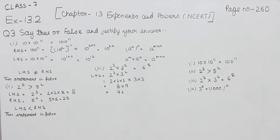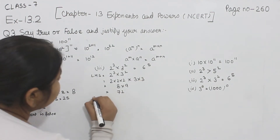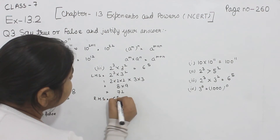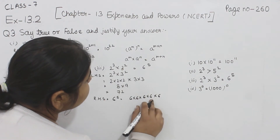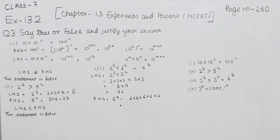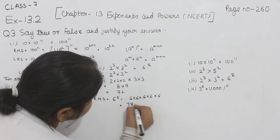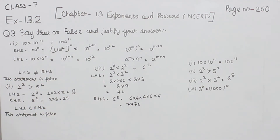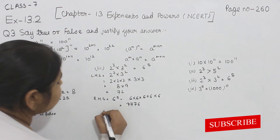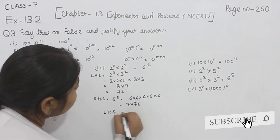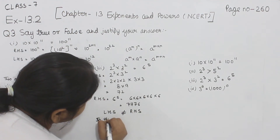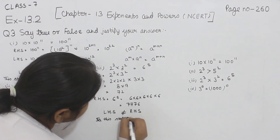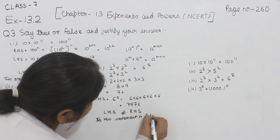Now for the right hand side, we have 6 to the power 5, meaning 6 multiplied by itself 5 times. Calculating this gives us 7776. Since left hand side equals 72 and right hand side equals 7776, left hand side is not equal to right hand side. So this statement is false.